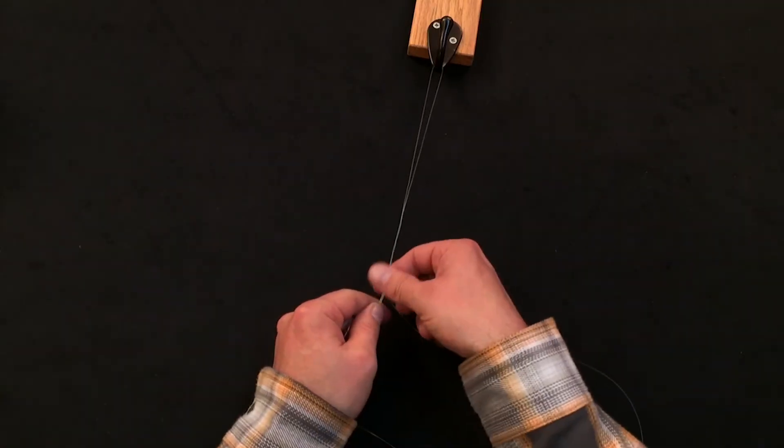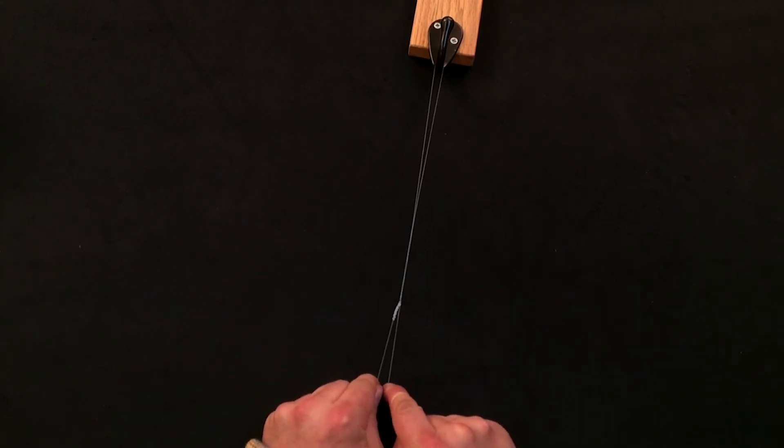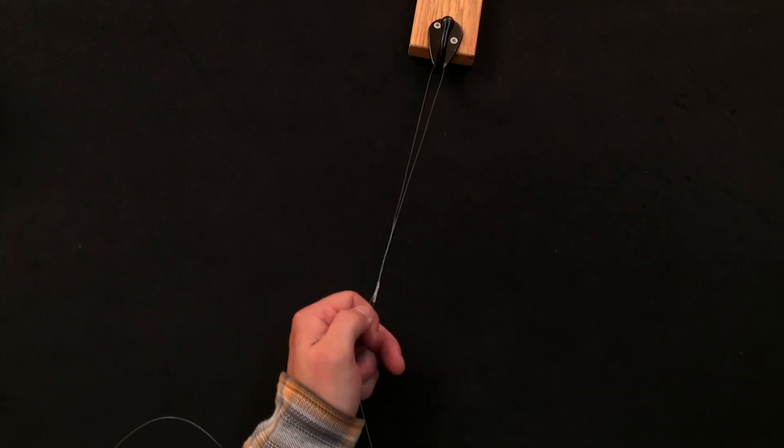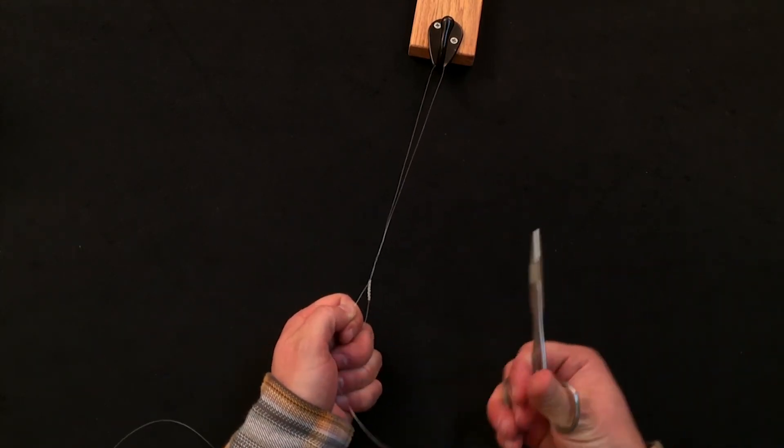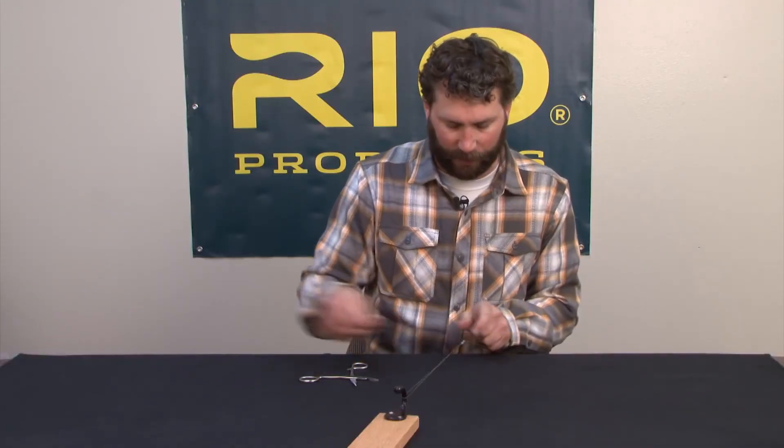Moisten that so it comes down nice and easy, and I'm left with this tag end to trim. I like to leave that about a quarter of an inch long.